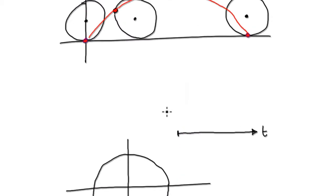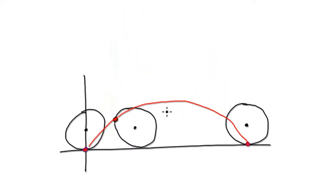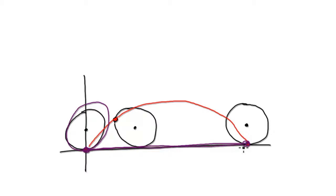Something important to point out: this distance here is the same as the circumference. This distance is actually 2πA — the circumference of the circle. Bear that in mind.